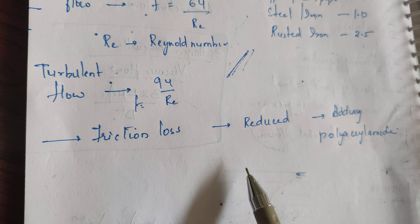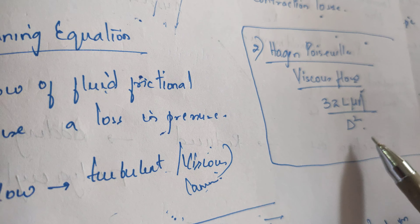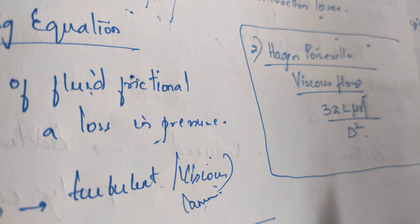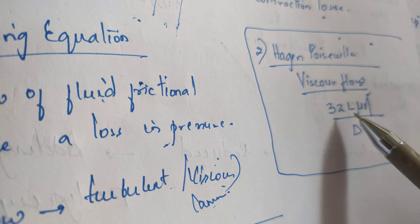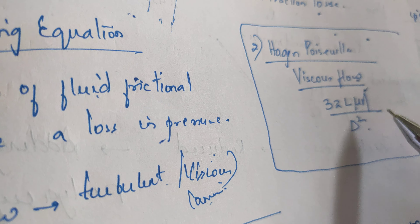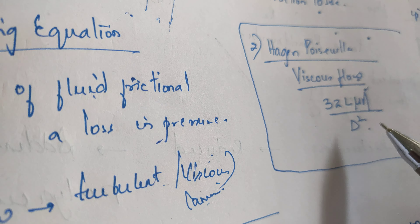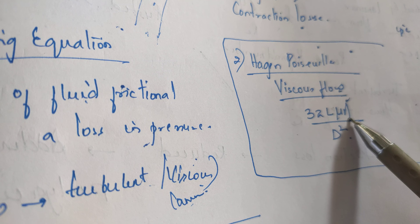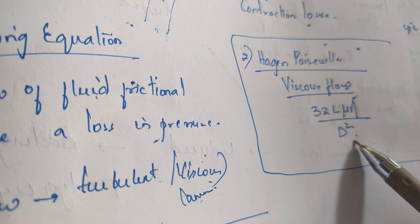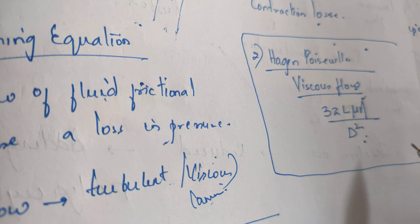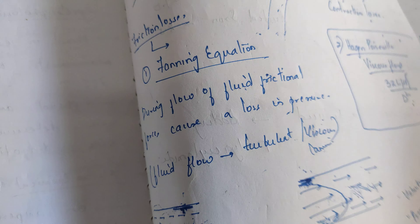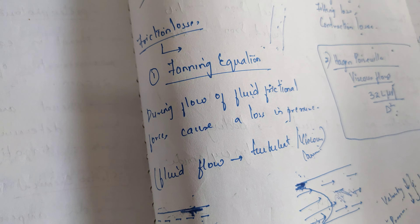For the Hagen-Poiseuille equation, which is used for highly viscous flow of fluid, the equation is: pressure drop = 32·L·u·η / d². Here, 32 is the constant given by Hagen-Poiseuille, L is the length of the pipe, u is the velocity, η is the viscosity, and d is the diameter of the pipe. This covers the major loss — friction loss — explained by the Fanning and Hagen-Poiseuille equations.